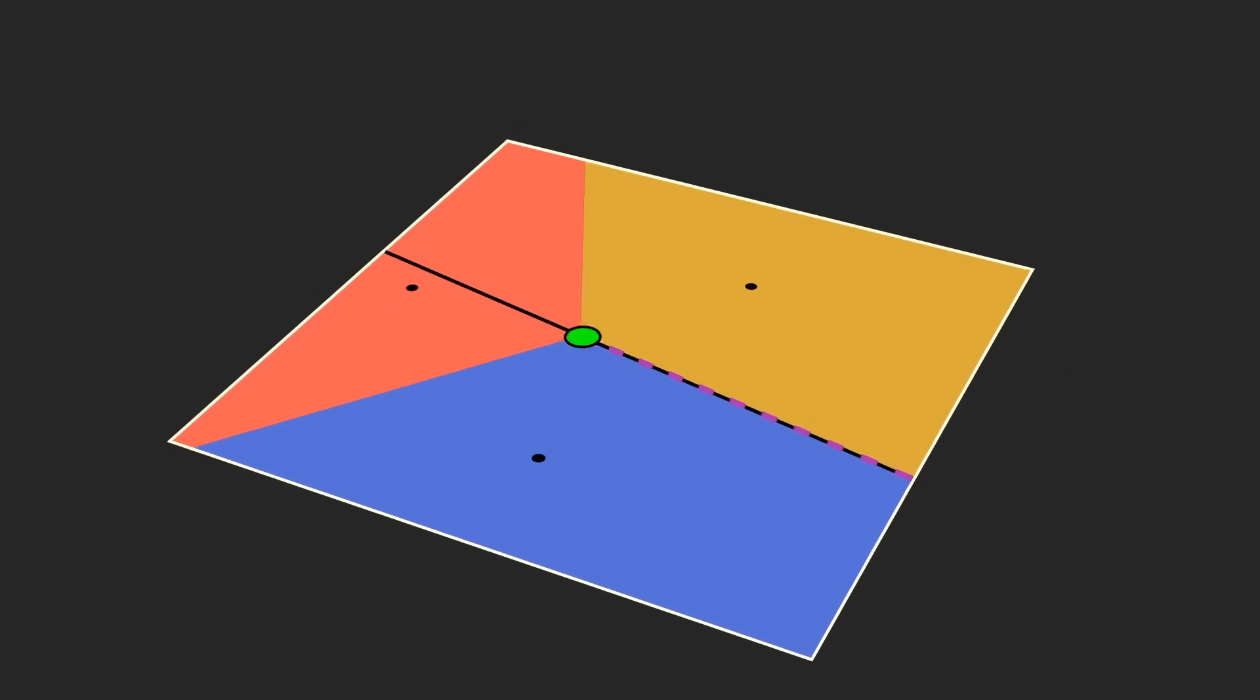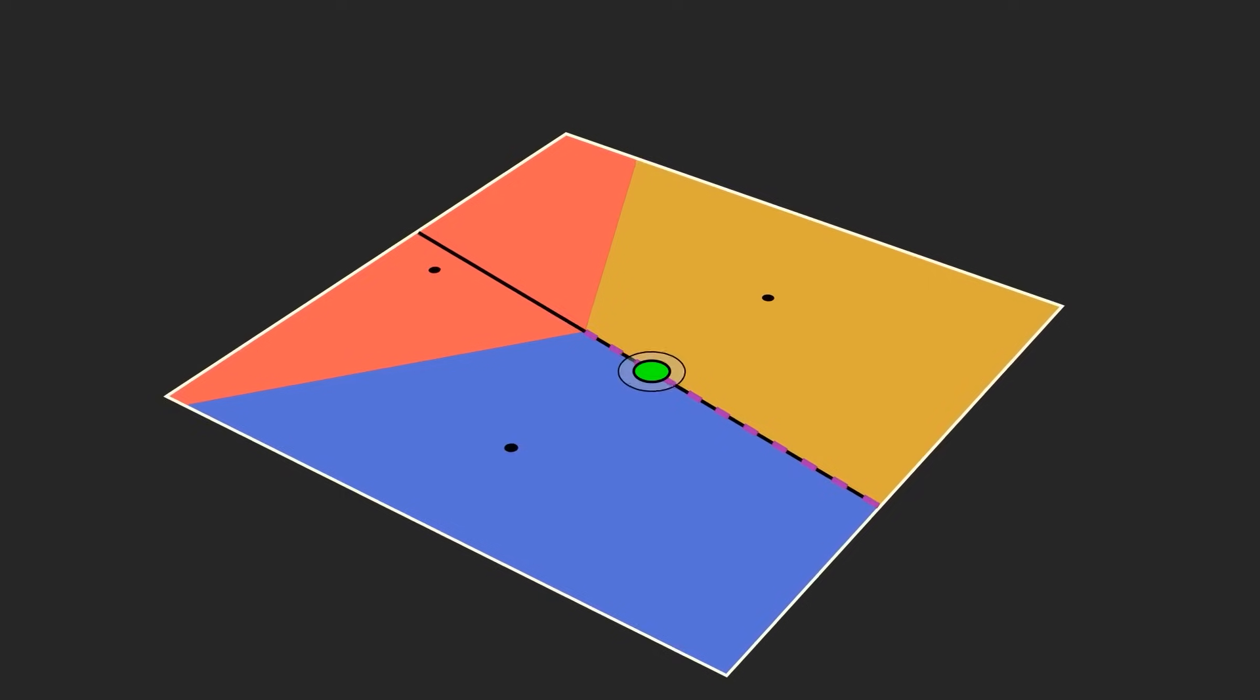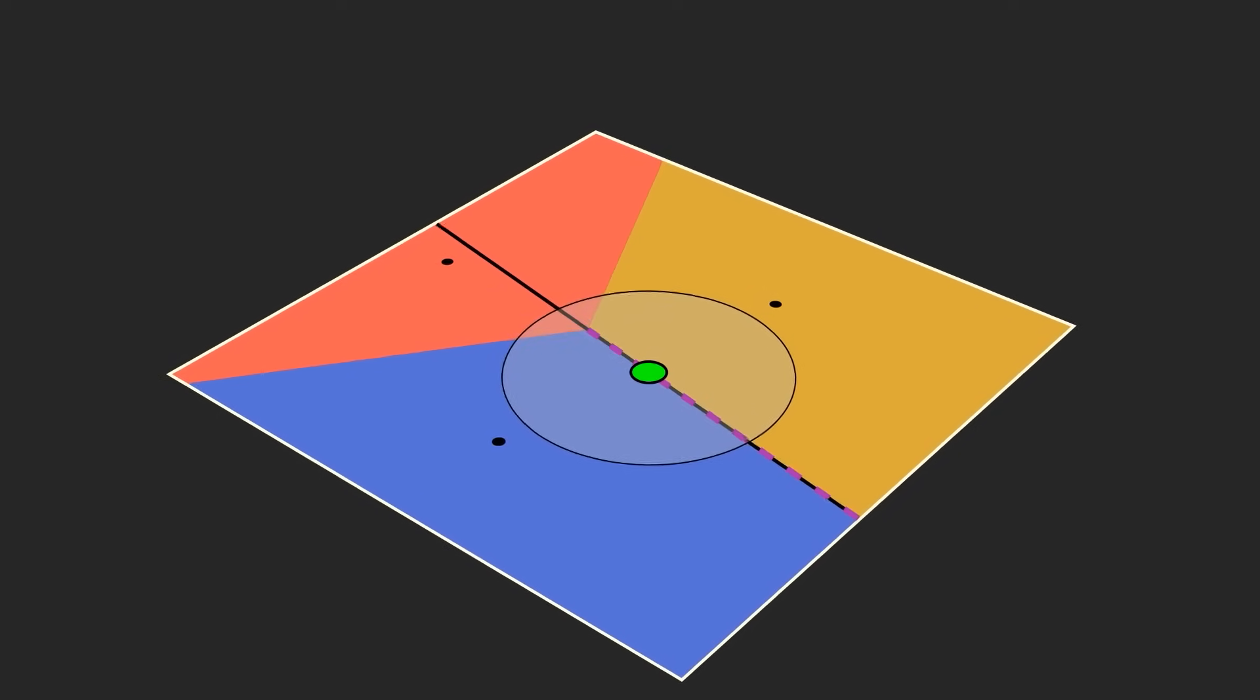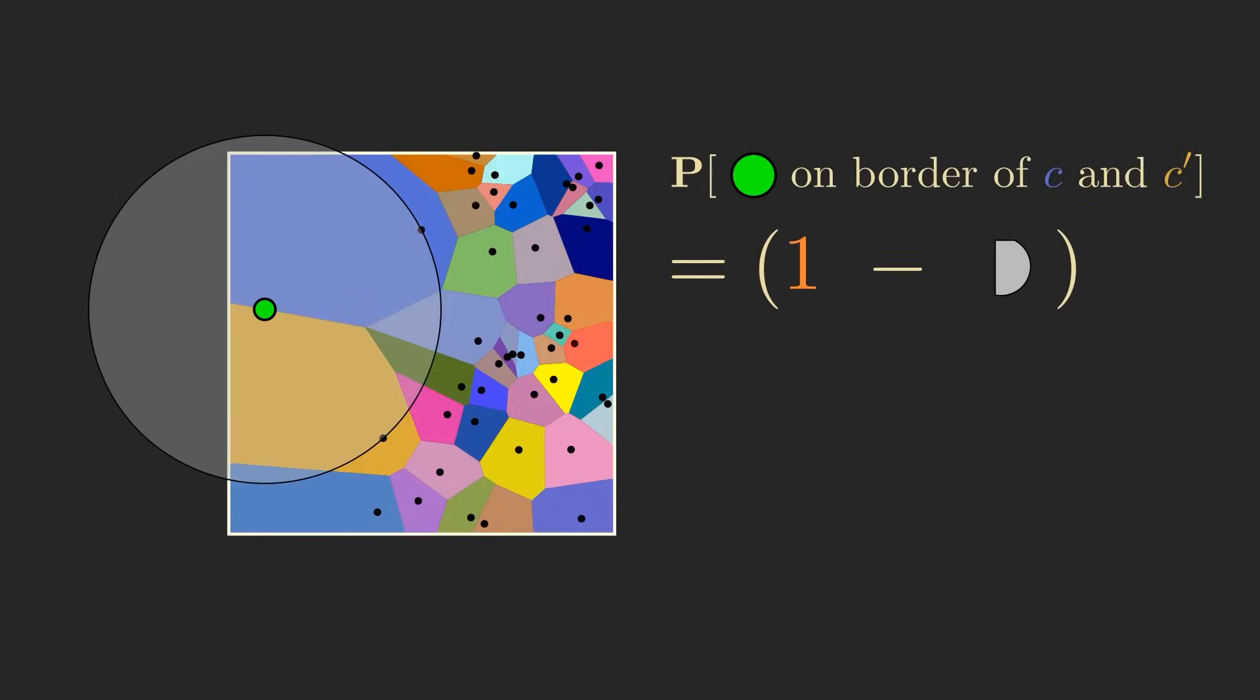We have two sites, and some point along their perpendicular bisector, and now we just need to make a circle centered at the point, until the edge of the circle touches the sites, and take one minus the area of the circle that lies within the square, all to the power of n minus 2.